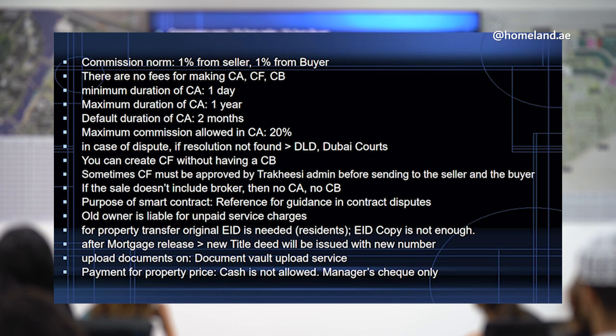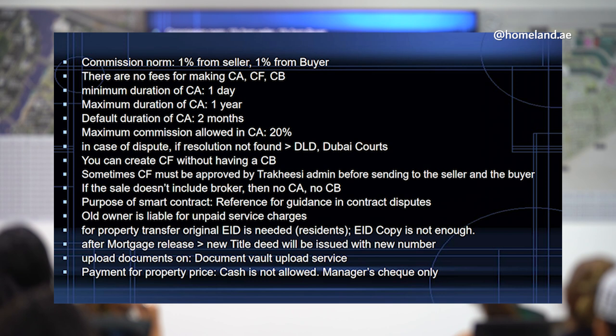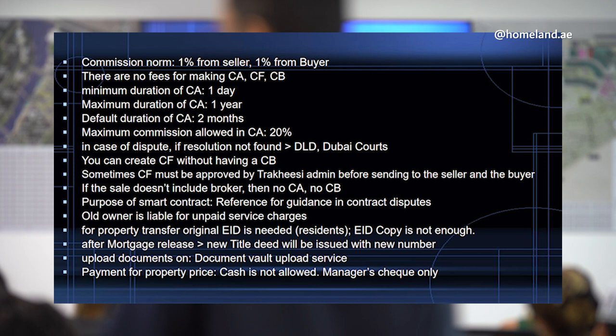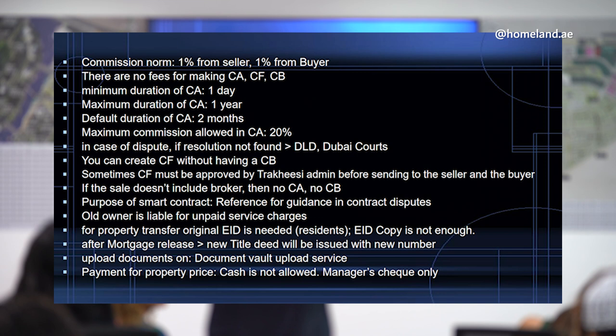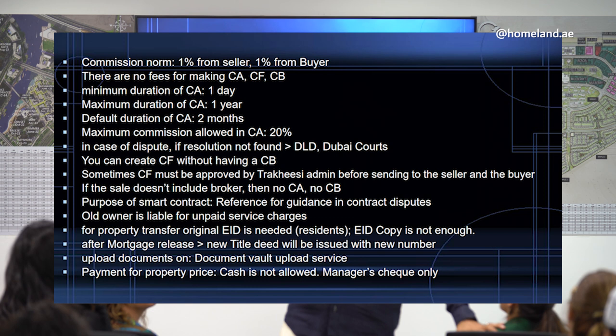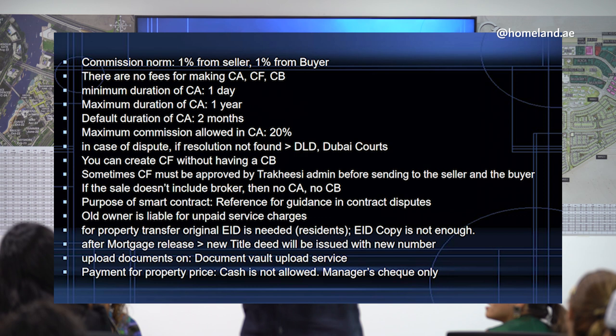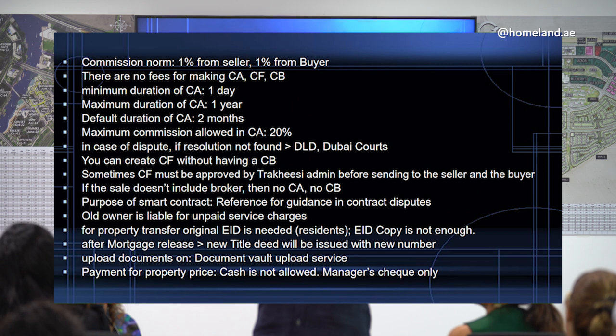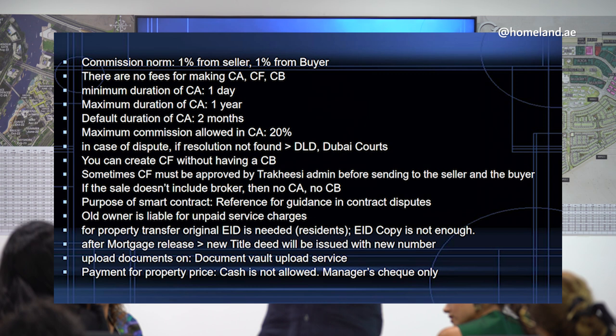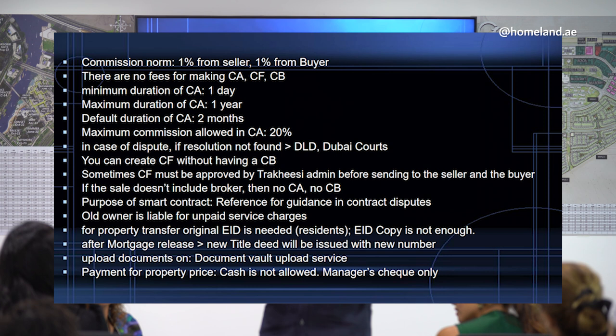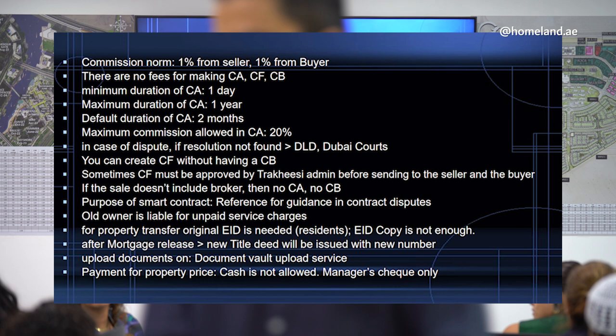When a CA has a maximum validity of one year, the CF generated from it also has a maximum validity of one year. To generate a CF, you do not need a CB — you generate it from the CA, and the system asks if you have a CB number; if not, you fill in the buyer's information manually. Sometimes a CF must be approved by a Tarakhisi admin before the link is sent to the buyer and seller.